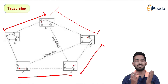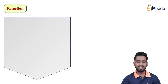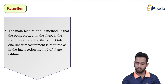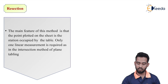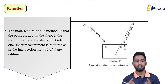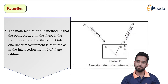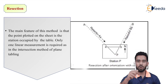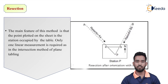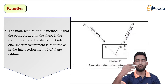The traversing method is suitable whenever all the points are accessible and we can actually set up the plane table at each station. The next method is the Resection method. In the Resection method, the main feature is that the point plotted on the sheet is the station occupied by the table. Only one linear measurement is required, similar to the intersection method where we only require the distance of the PQ line. In the Resection method, we require only one linear measurement — the distance of line AB.